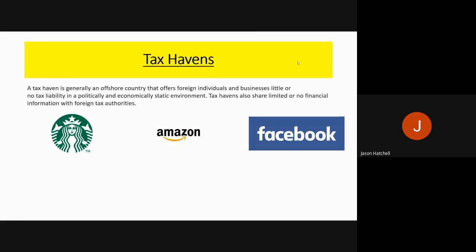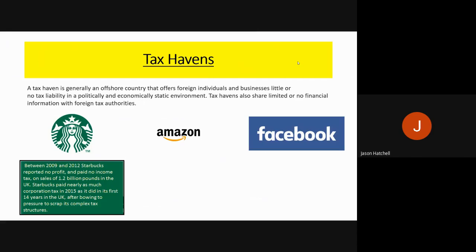The next topic is tax havens. A tax haven is generally an offshore country that offers foreign individuals or businesses little or no tax in a politically and economically stable environment. These are useful for companies to register their tax in and pay less tax than in the country they are actually operating in. Between 2009 and 2012, Starbucks reported no profit and paid no income tax on sales of around £1.2 billion in the UK, because they registered in an offshore tax haven and diverted all their taxes through it.